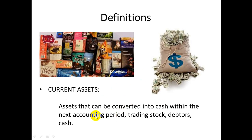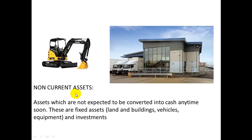Some definitions just to recap: current assets are assets that are converted into cash within the next accounting period — so within one year, 12 months. Things like trading stock, debtors (people that owe us money), and cash — like physical cash, like you can see here.